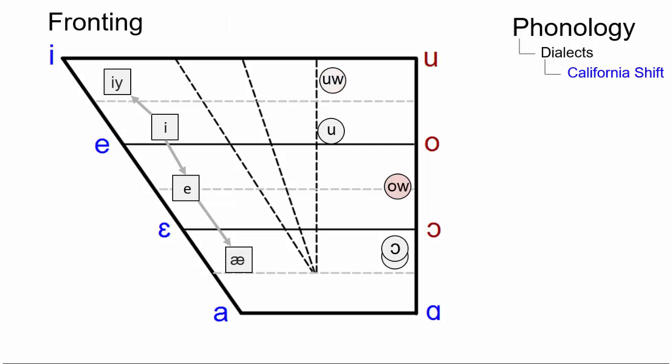Finally, the long O becomes a diphthong, with the first part shifting towards E, as in bed, ten or guest.